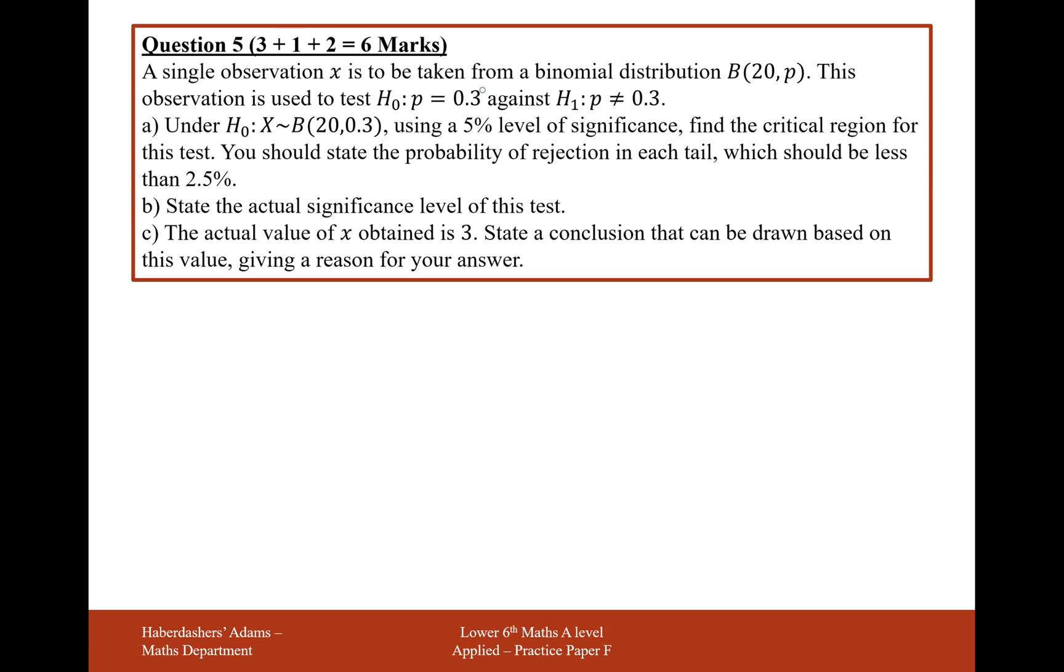6 would probably be the most likely outcome here, but it's more than acceptable for there to have been 5 heads or 7 heads, probably acceptable for there to be 4 heads or 8 heads. What we're going to look for in this question is the unacceptable values where we think that's gone too low, maybe no heads appearing or just one head appearing, that's too low.